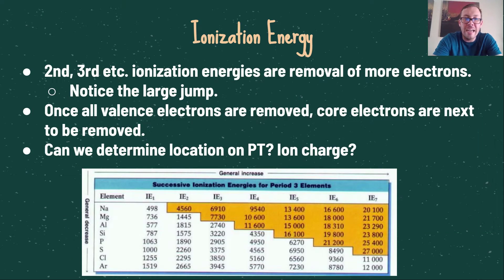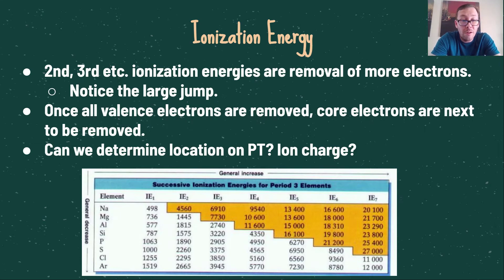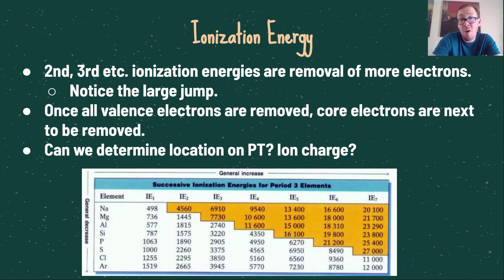Now let's look at second and third ionization energies — the removal of more electrons. Notice that in some steps there is a large jump. For example, in sodium, the removal of the first electron requires 498 kJ/mol. However, the next electron to be removed requires 4,560 kJ/mol. Sodium only has one valence electron in its outer shell, and when we remove that electron, it becomes isoelectronic with the noble gas neon.